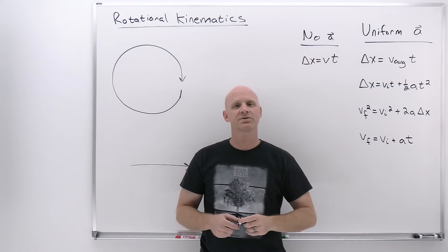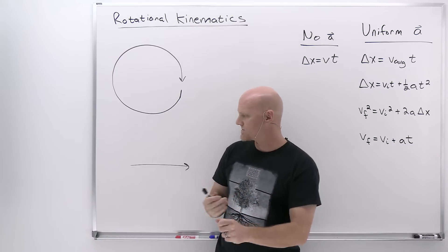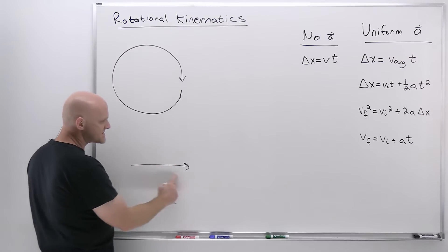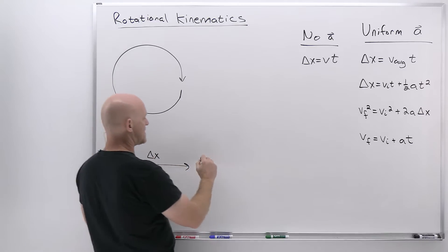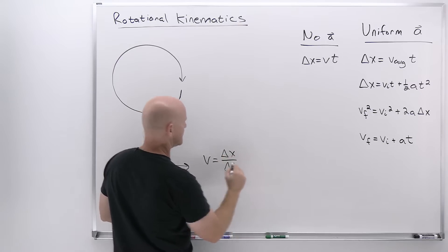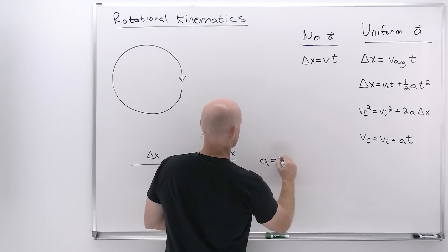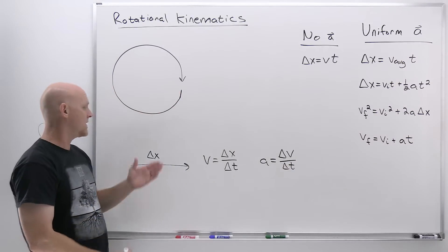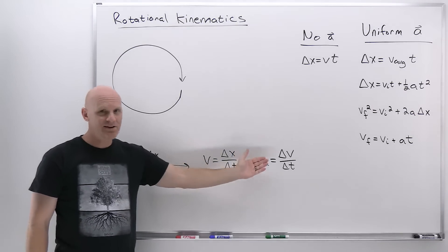We're going to start with rotational kinematics by reviewing some linear kinematics — displacement, velocity, and acceleration. When traveling in a straight line, we had some distance we traveled and defined that as displacement. How fast we're traveling that displacement is delta x over delta t, which is velocity. And if that velocity itself was changing, then we had acceleration equaling the change in velocity over the change in time. We'll now call these linear displacement, linear velocity, and linear acceleration.